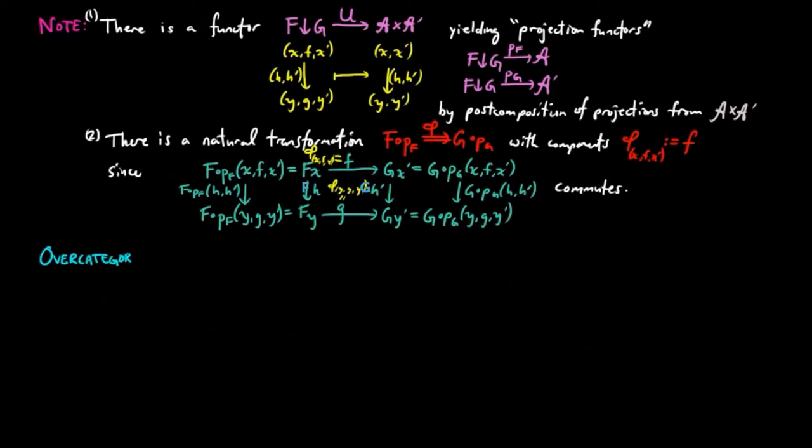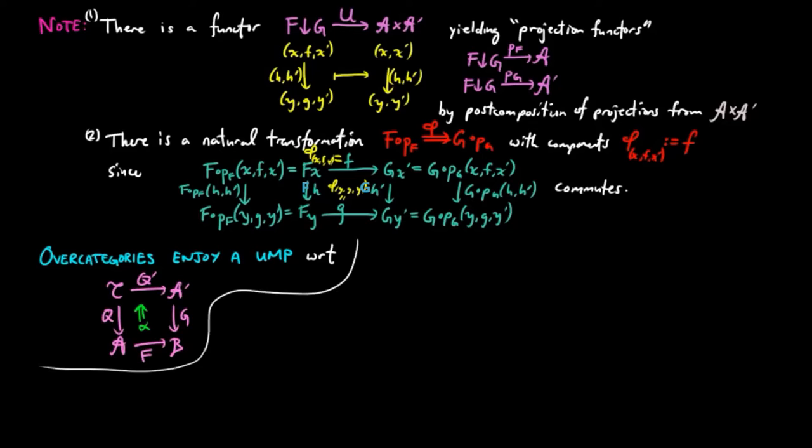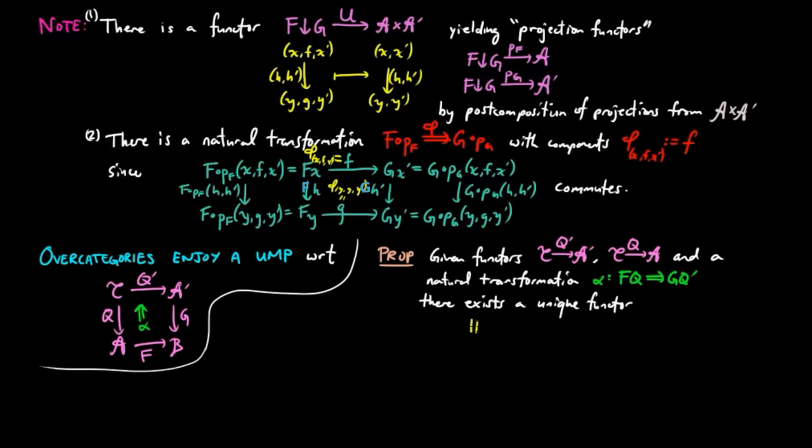Then this structure that we have just described gives us a universal mapping property that over-categories enjoy. Precisely, given functors q prime from a category c to a prime, and q from c to a, and a natural transformation alpha from fq to gq prime, there exists a unique functor h from c to f over g, such that pfh is equal to q, pgh is equal to q prime, and phi h is equal to alpha.